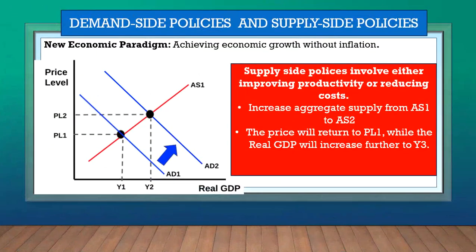Moving to supply and demand side policies together: we know that applying the demand side policies gives us a new output Y2, so GDP increases, which is good, but unfortunately the price also increases to PL2, which is not good.